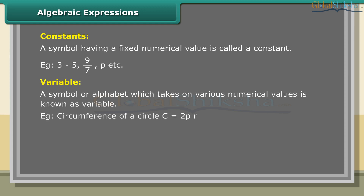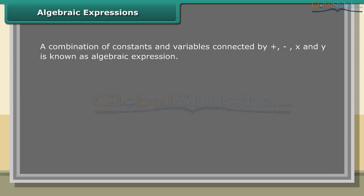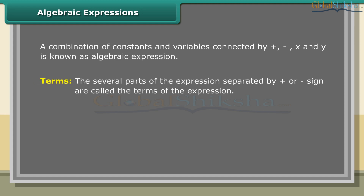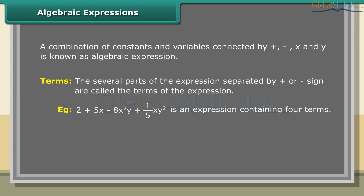Example: the circumference of a circle C equals 2πR, where R is the radius of the circle. Here 2π are constants and C, R are variables. An algebraic expression is a combination of constants and variables connected by plus, minus, multiplication and division. The several parts of the expression separated by plus or minus sign are called the terms of the expression. Example: 2 plus 5x minus 8x²y plus 1/5xy² is an expression containing four terms: 2, 5x, -x²y, and 1/5xy².